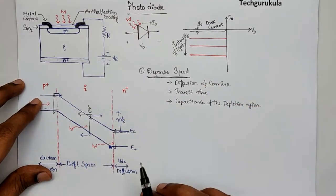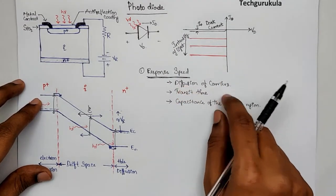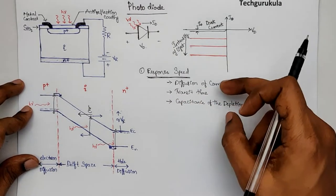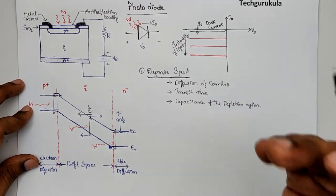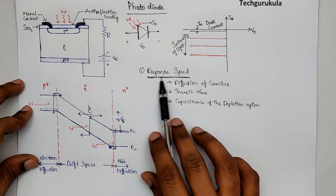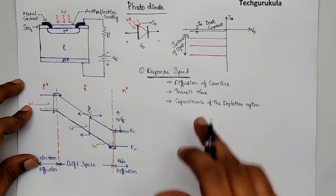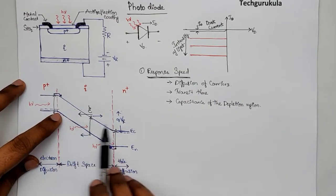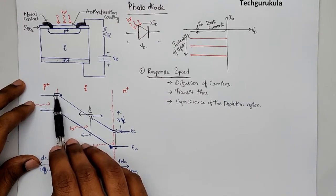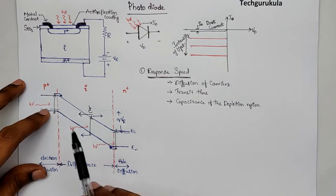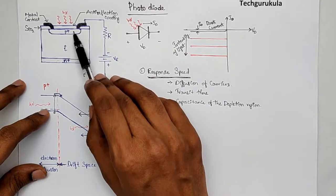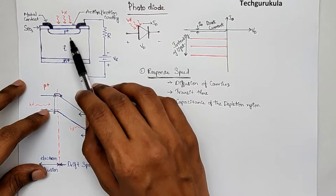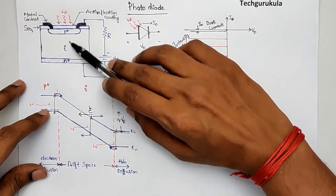All three parameters — diffusion time, transit time, and RC time constant — should be as small as possible for fast response. To reduce diffusion, we need to minimize the distance carriers must diffuse before reaching the electric field region. That is why the P-plus region is made very thin and close to the surface, so that most of the light goes directly into the intrinsic region where the electric field is present, close to the surface.